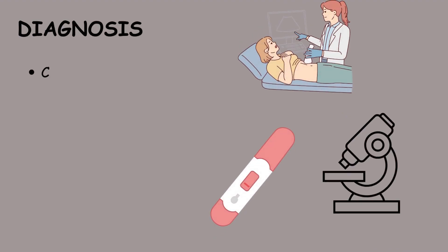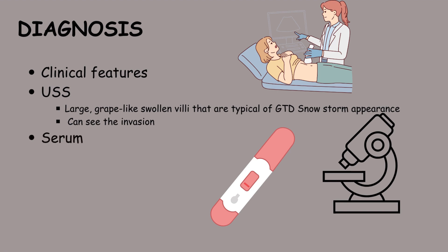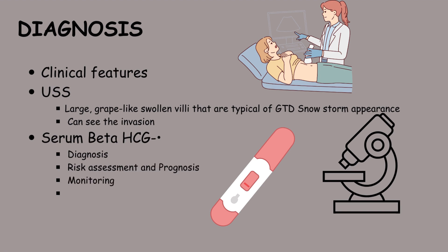Diagnosis involves recognising the clinical features mentioned earlier, supported by ultrasound findings revealing large grape-like swollen villi, indicative of the characteristic snowstorm appearance and detection of invasion, along with elevated serum beta HCG levels. Risk assessment, prognosis and monitoring typically follow, involving tumour marker tracking and histological examination for confirmation and management planning.